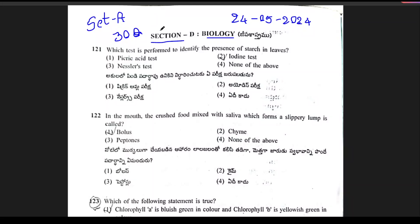Let's start from question 121. Question 90: which test is performed to identify the presence of starch in leaves? The right answer is the iodine test.